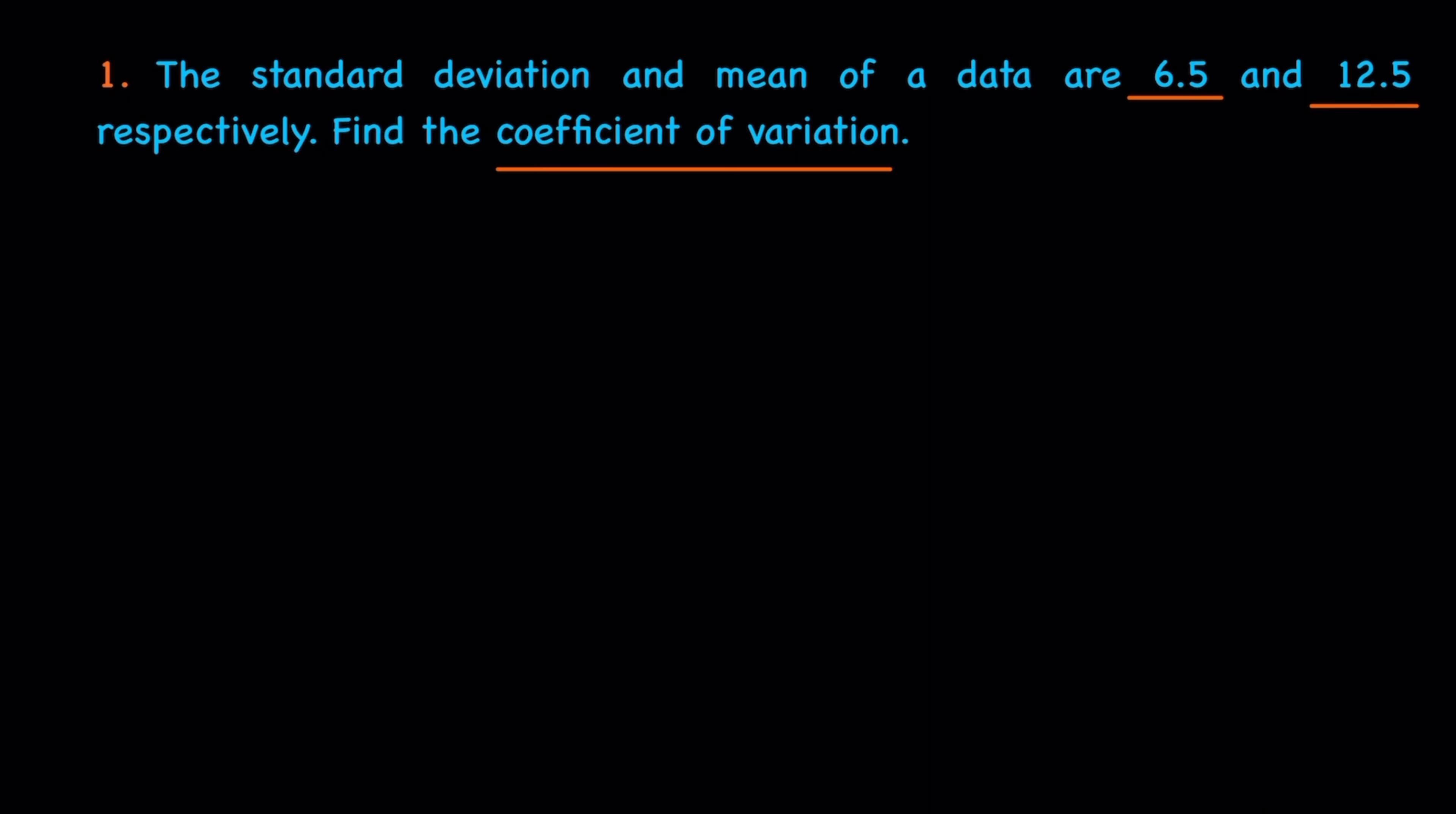The coefficient of variation is a basic formula. The coefficient of variation (CV) is equal to standard deviation (sigma) divided by mean, then multiplied by 100.